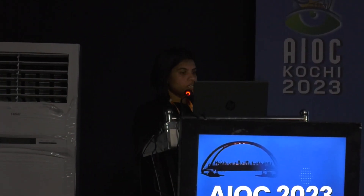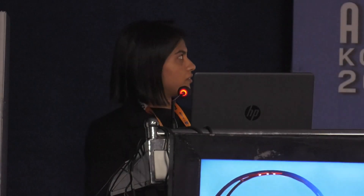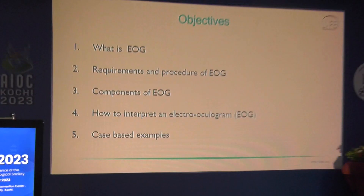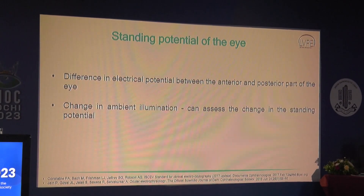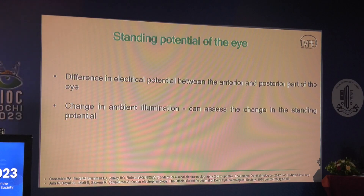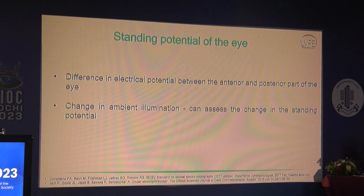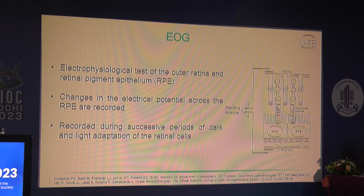Electrooculogram technique and clinical applications: before understanding EOG, one must understand the standing potential of the eye — the difference in electrical potential between the cornea anteriorly and the retina (Bruch's membrane and RPE) posteriorly. By changing ambient illumination, we can assess changes in this standing potential. EOG is an electrophysiological test of the outer retina and RPE, recording changes in electrical potential across the RPE — specifically between the apical and basolateral membranes — during successive dark and light adaptation periods.